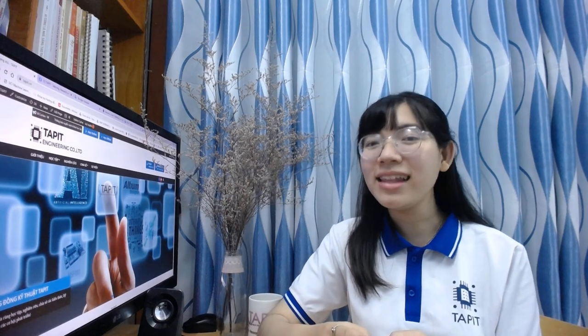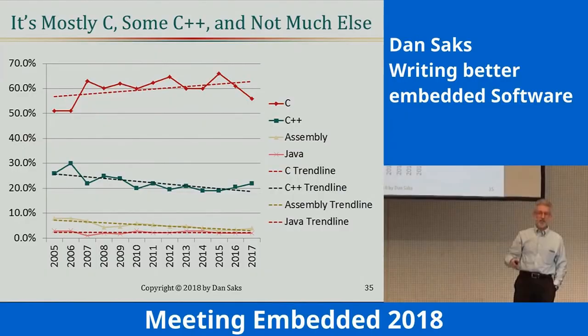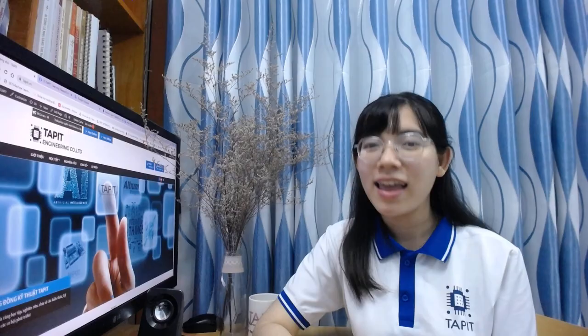Secondly, the C language is a programming language trusted by more than 50% of devices in embedded systems and IoT. The chart in the image I share is extracted from a presentation by Mr. Denshark, one of the world's leading experts in C and C++ language research. He presented at the Embedded 2018 meeting, with the topic focusing on software and hardware development for embedded systems and IoT. You can refer to the link I share below this video.